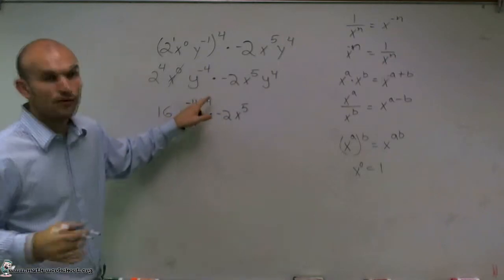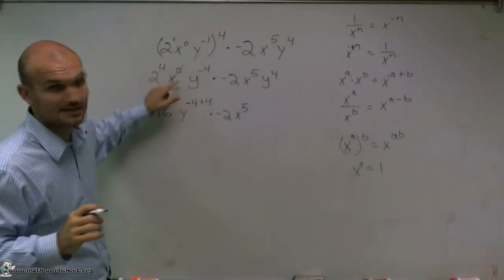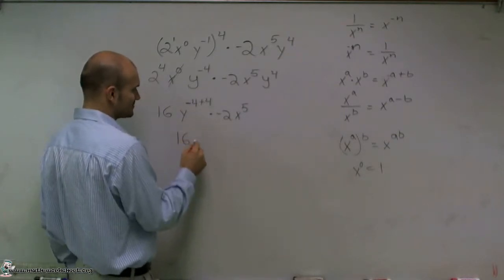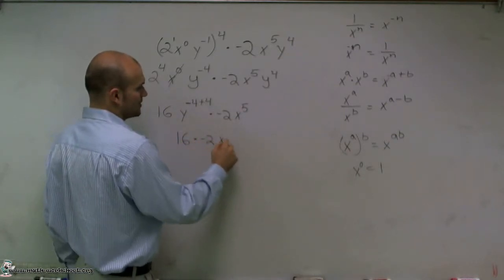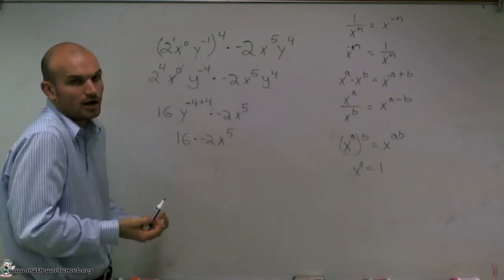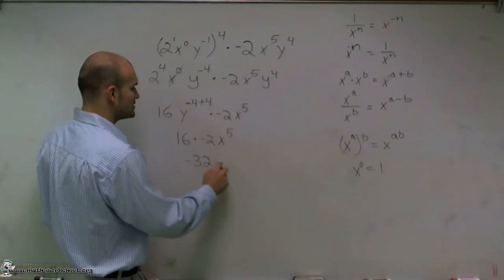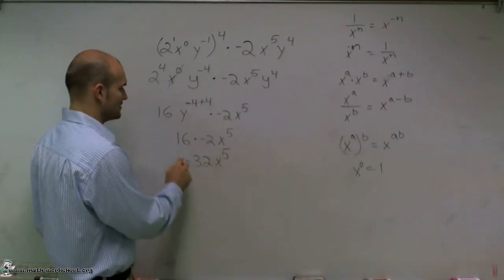Well, a negative 4 plus 4 is going to give me 0 again. And like x to the 0, y to the 0 is going to cancel out. So therefore, I'll be left with 16 times negative 2x to the 5th. Now all I have to do is multiply my 16 times my negative 2, which would give me negative 32 times x to the 5th.